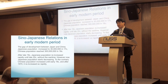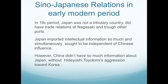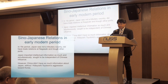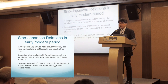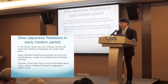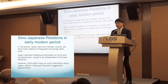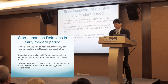One hundred years ago, Japan's GDP reached China's GDP — a significant shift. In the 19th century, Japan was not a tributary country of the Qing dynasty, but did have trade relations through Nagasaki, Ryukyu/Okinawa, and Matsumae. The Qing intellectuals did not have much information about Japan except for Toyotomi Hideyoshi's aggression toward Korea. Japan, however, imported many books from China and absorbed a great deal of intellectual information.